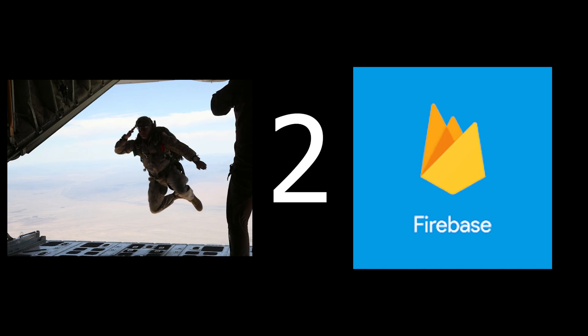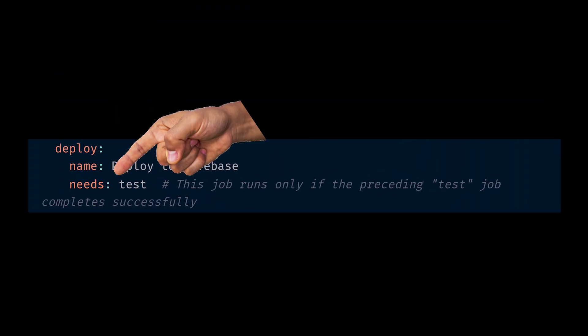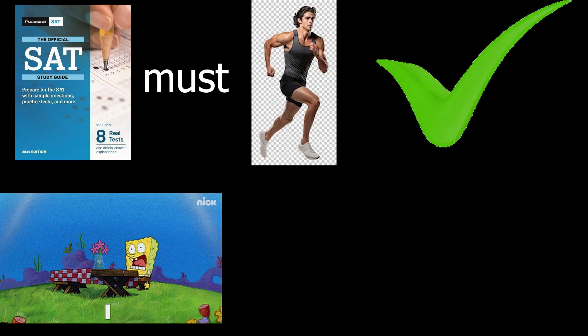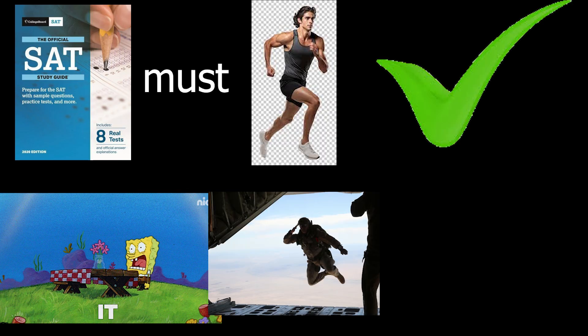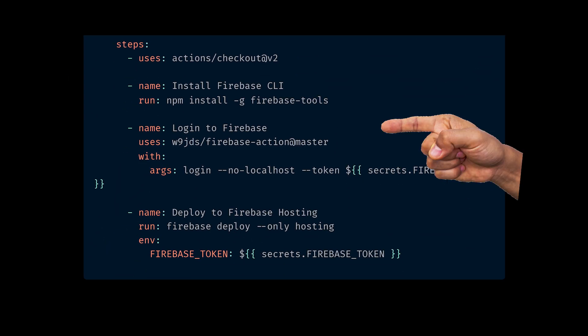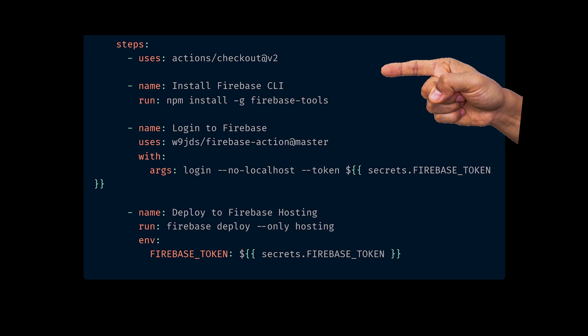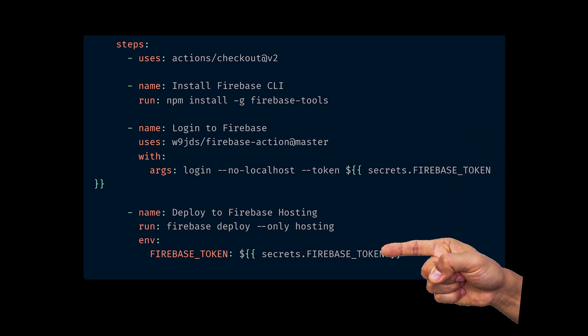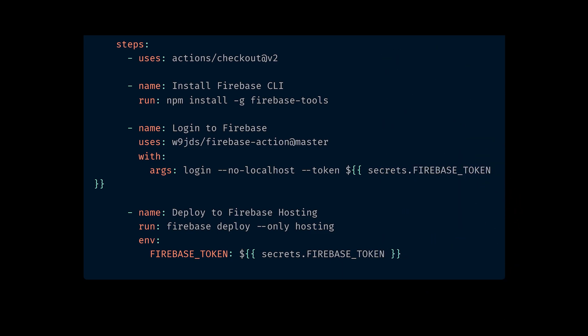For this example, we're deploying to Firebase, but you can choose pretty much anywhere to deploy to. We can see the needs flag, which means the tests must run successfully as they are now a dependency of the deploy stage. After this need is fulfilled, we start to run the deploy commands. Inside of the steps area of our file, these are the steps that the action will run in sequence when the event is fired.